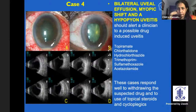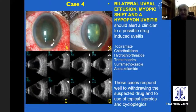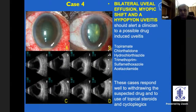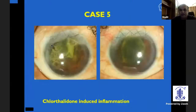This is another case referred to us, initially thought of as panophthalmitis, then as endogenous endophthalmitis, presenting with a shallow AC. Somebody tried doing a PI. But when we took the history, the patient was taking topiramate. There was a peripheral choroidal detachment in all quadrants and hypopion in both eyes. The clue here is to take a meticulous history.